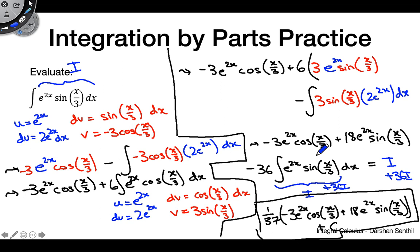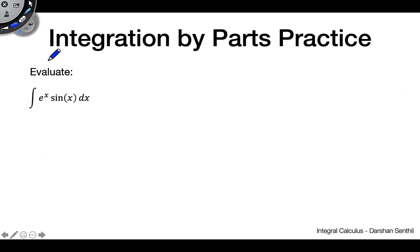The next example does something similar but uses tabular integration. We've simplified to just e to the x times sine of x — no coefficients — to make it easier to follow. We'll need to do tabular integration a little differently for this example.